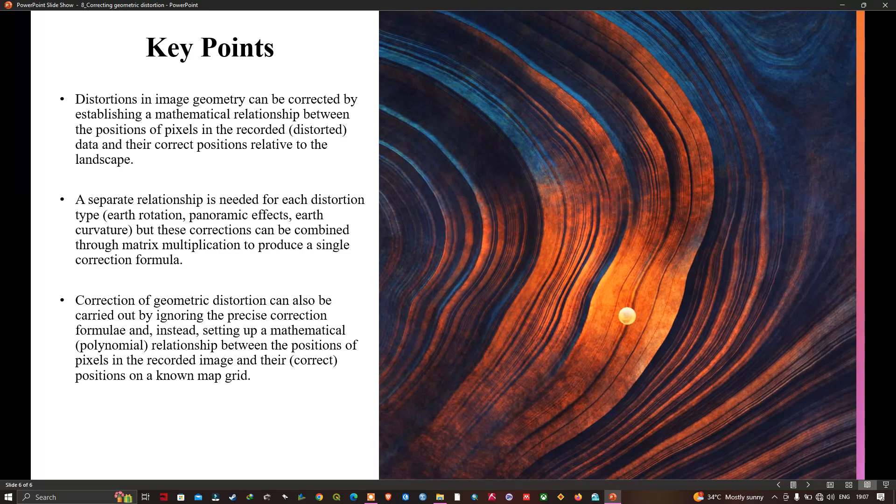A separate relationship is needed for each distortion type, for example earth rotation, panoramic effect, earth curvature. But these corrections can be combined through matrix multiplication to produce a single correction formula. And lastly, the correction of geometric distortion can also be carried out by ignoring the precise correction formulas and instead setting up a mathematical relationship between the position of the pixels in the recorded image and their position on a known map grid.